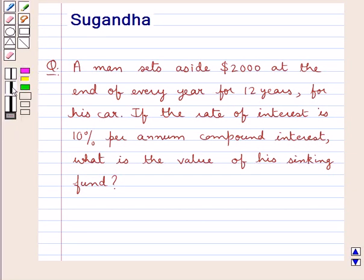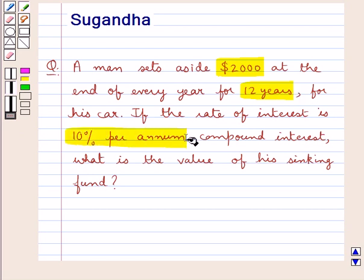Hello and welcome to the session. In this session we discuss the following question: A man sets aside $2,000 at the end of every year for 12 years for his car. If the rate of interest is 10% per annum compound interest, what is the value of a sinking fund?